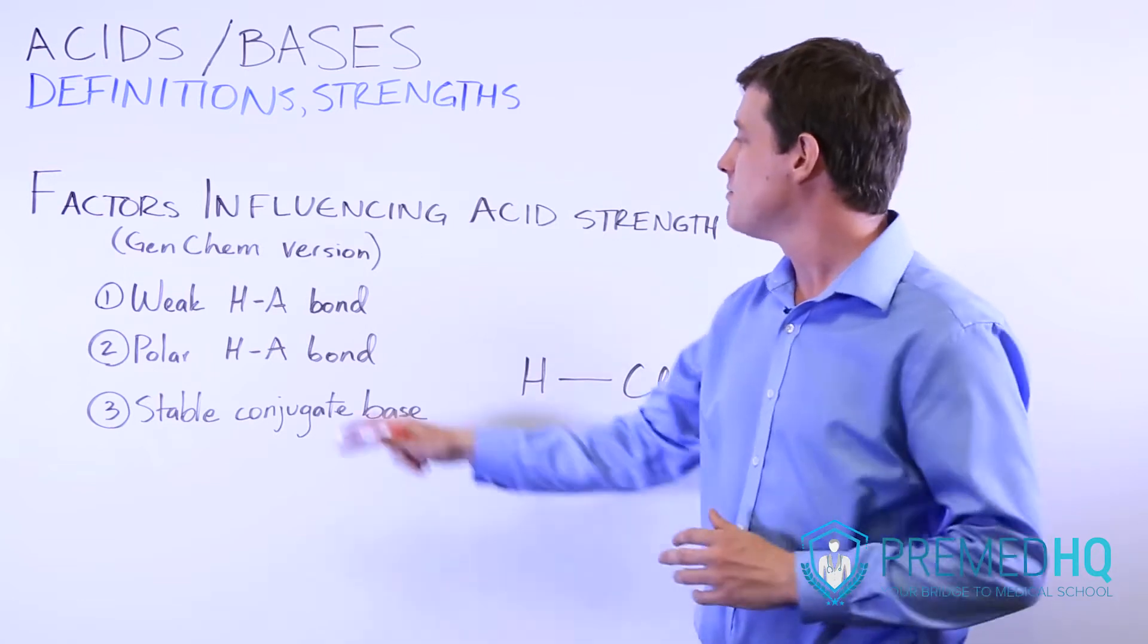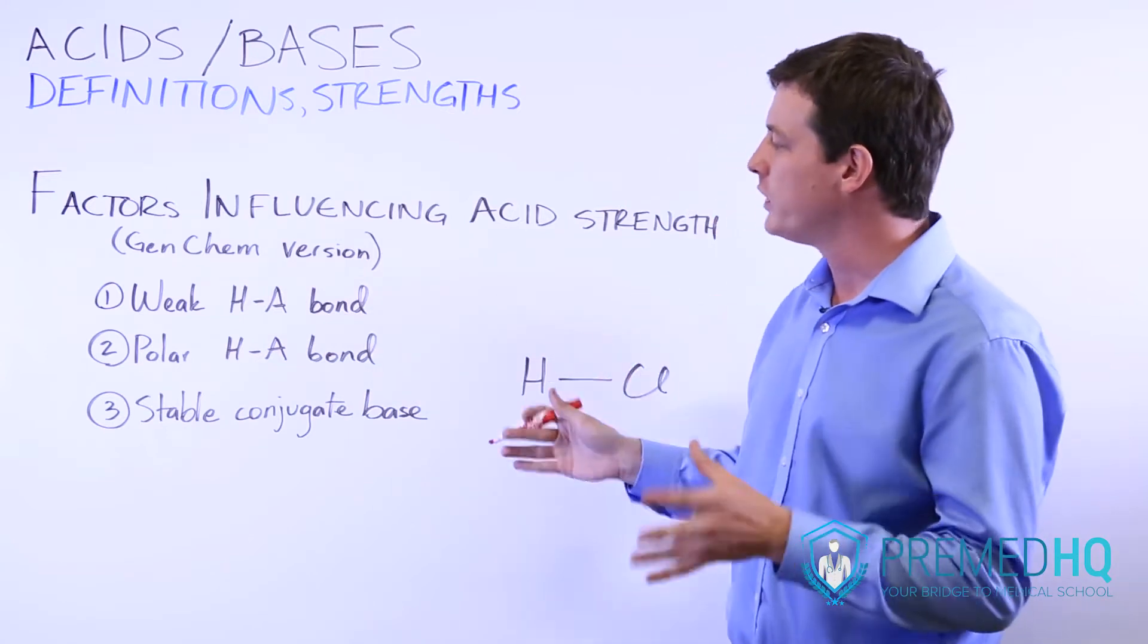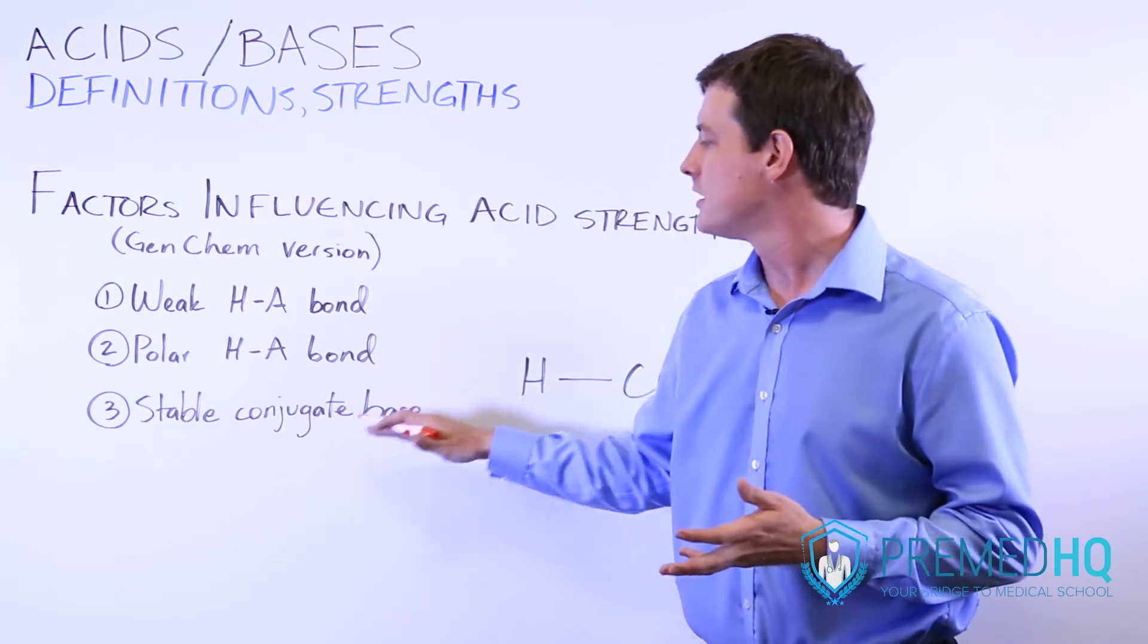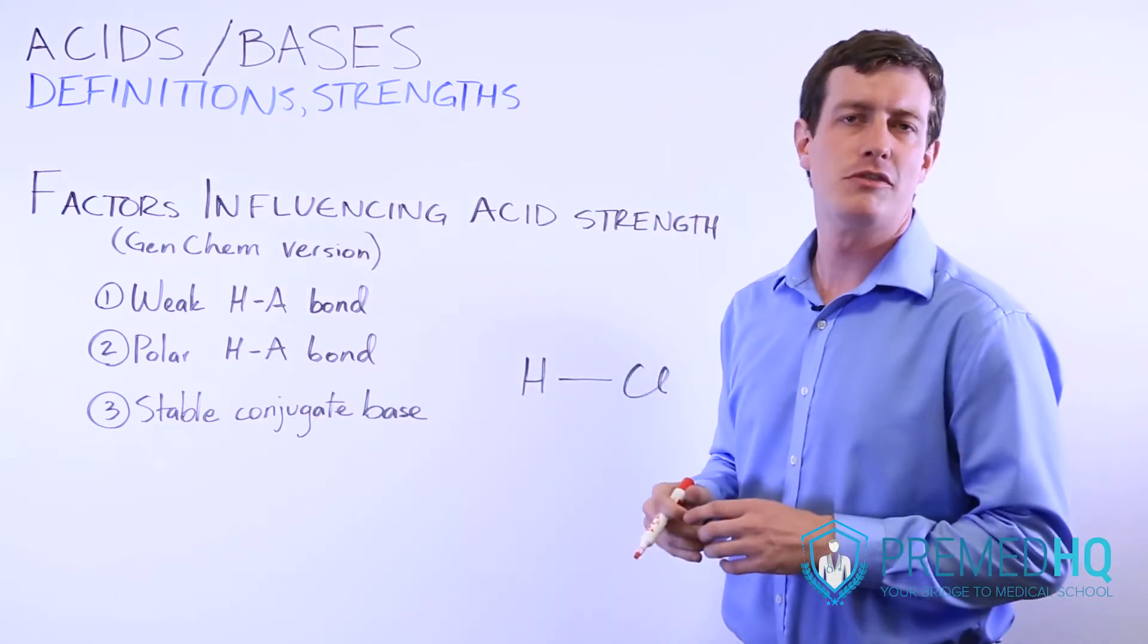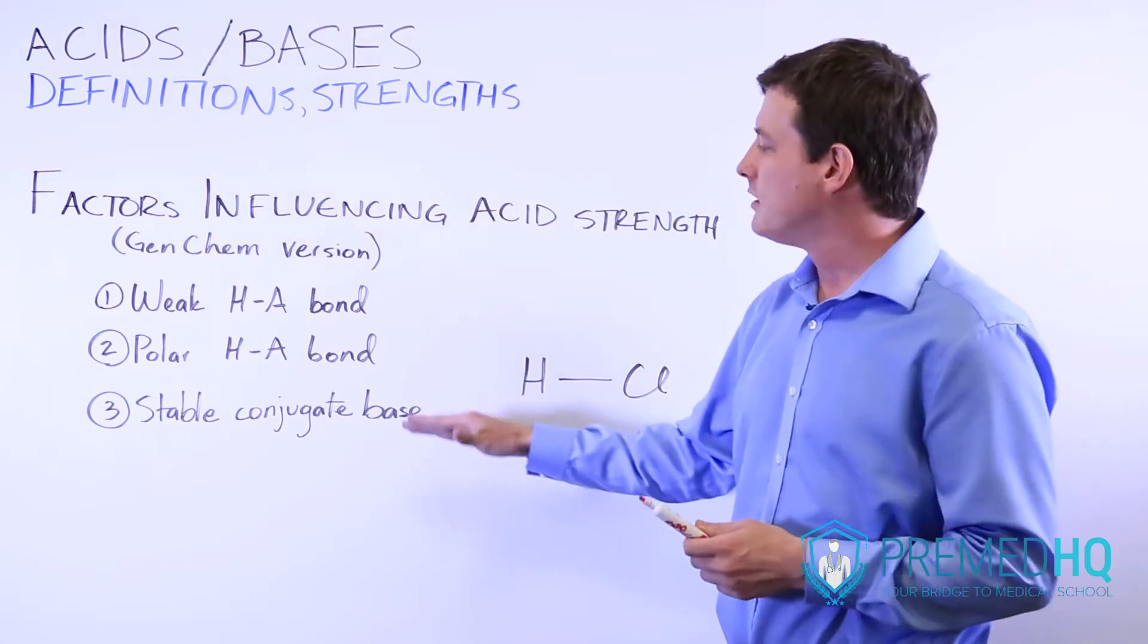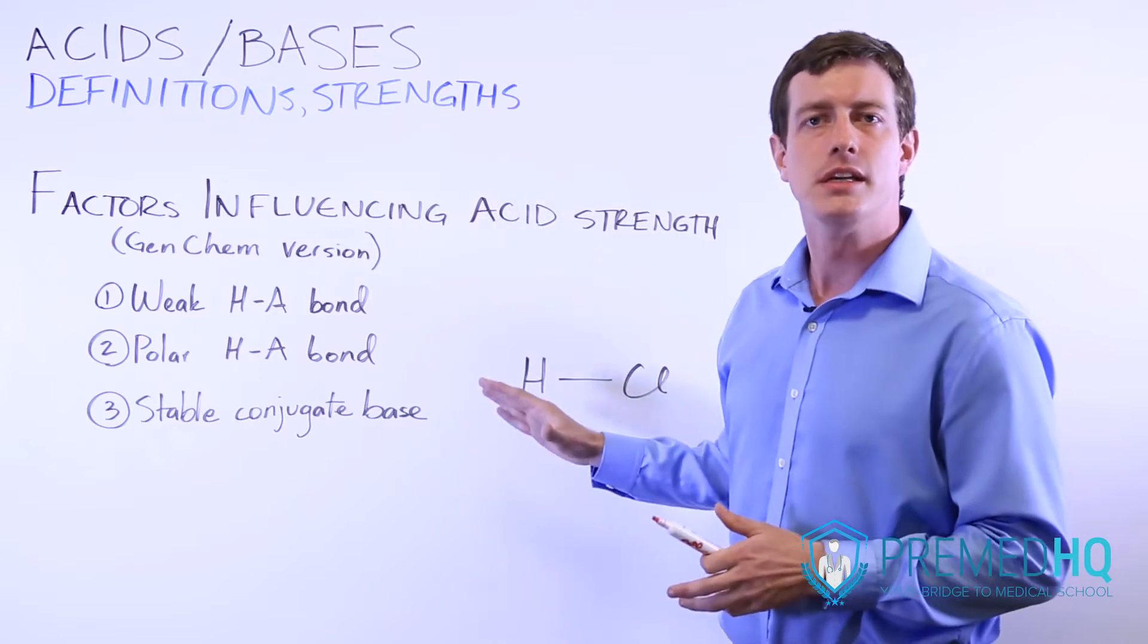You also want this to be polar, and one thing to be aware of is that a polar H-A bond is usually a rather weak one. Third, you want a conjugate base that is very stable, and that brings in other factors like resonance and electronegativity differences. But the more stable the conjugate base is, the stronger that acid will be.